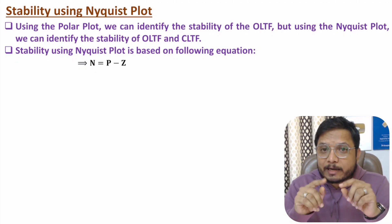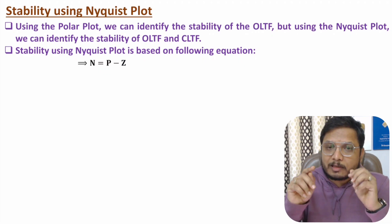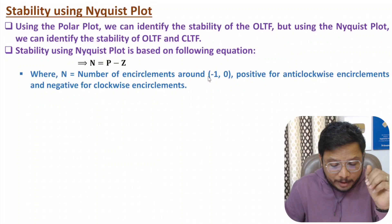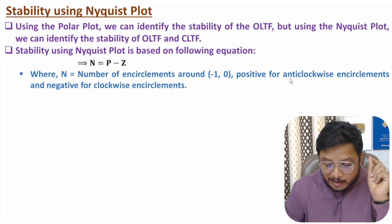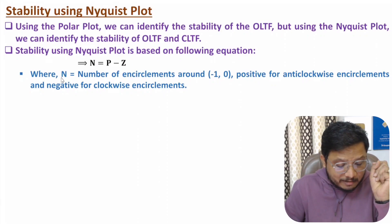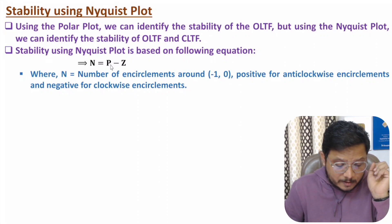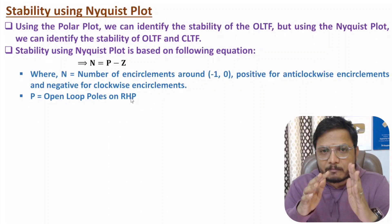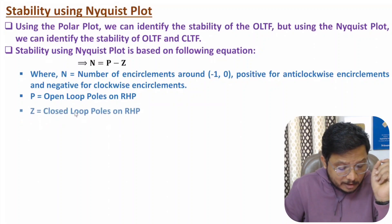In this equation, N is the number of encirclements around the critical point, which in the Nyquist plot is minus 1 comma 0 (real value minus 1, imaginary value 0). N is positive for anti-clockwise encirclements and negative for clockwise encirclements. P is the number of open loop poles on the right half plane (RHP), and Z is the number of closed loop poles on the RHP.